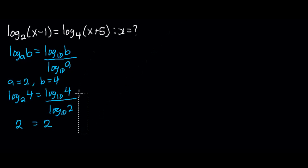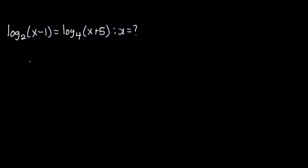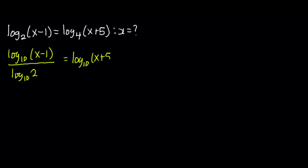What we are going to do now is reduce the equation using the property. Log to the base of 2 of x minus 1, according to the property, can be written as log to the base of 10 of x minus 1 over log to the base of 10 of 2. This is also equal to log to the base of 10 of x plus 5 over log to the base of 10 of 4.